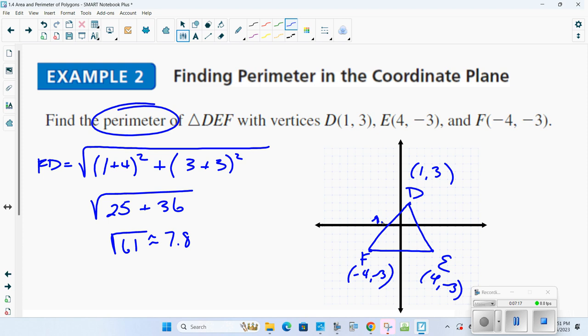Now, let's try to find length ED using E and D. So 1 minus 4 squared plus -3 minus 3 squared. So ED equals square root of, I end up getting -3 squared which is 9, plus -6 squared which is 36. So I end up with the square root of 45. Square root of 45, using my calculator, is 6.7.